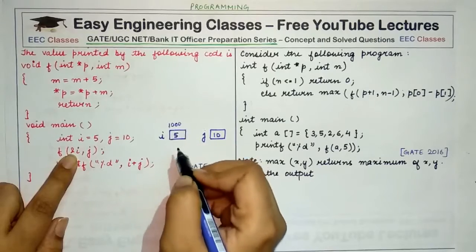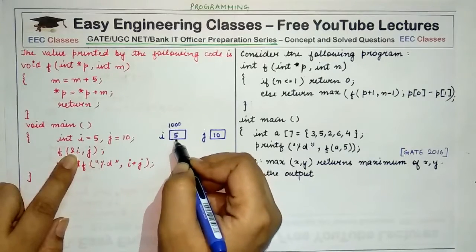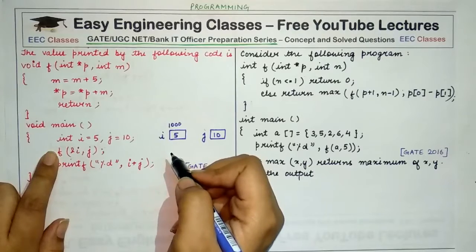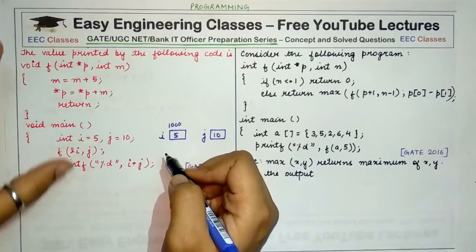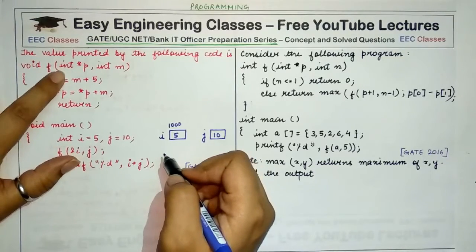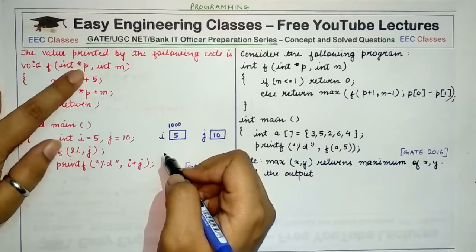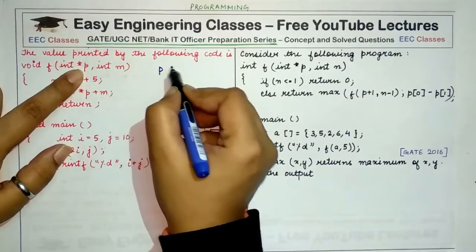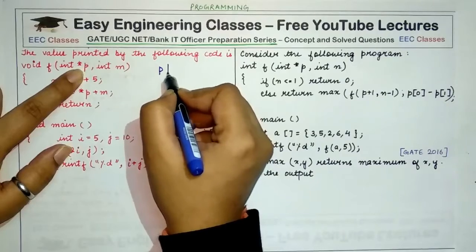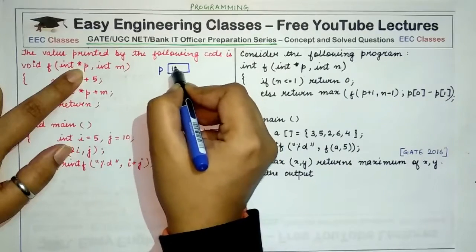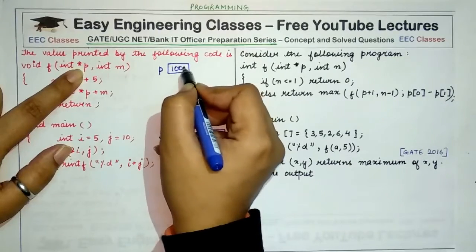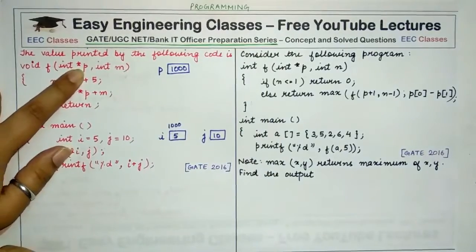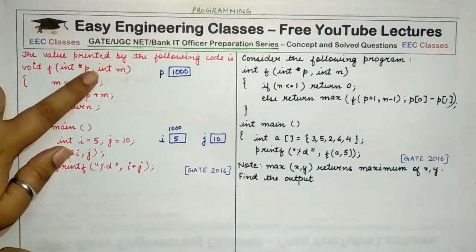Let's suppose the address of i is 1000, so value 1000 would be passed as a parameter of function f. Going to function f, there is a pointer p that accepts this address value, so when f is called, pointer p would contain the address of variable i — meaning it points to variable i.